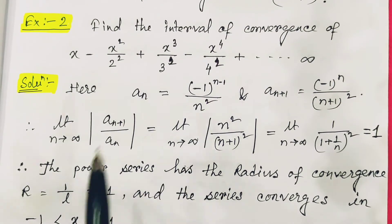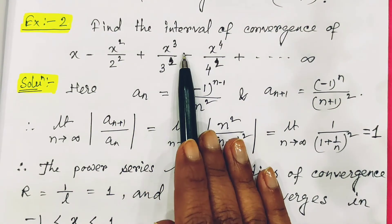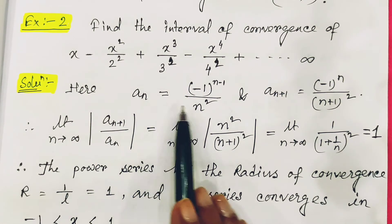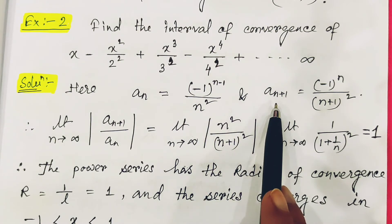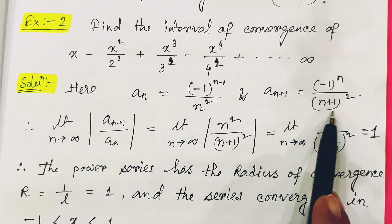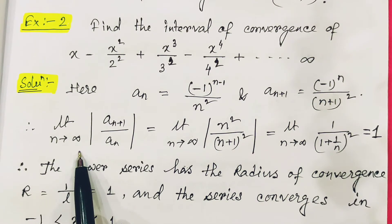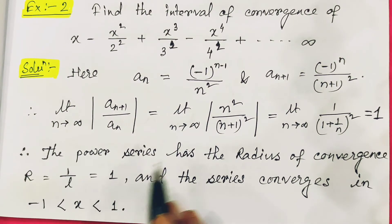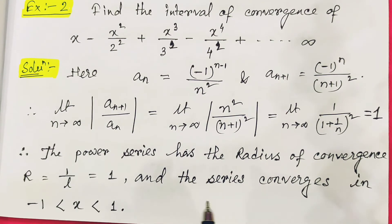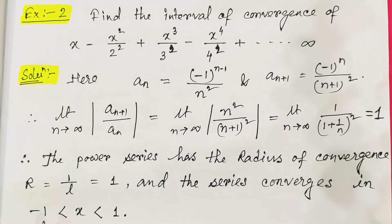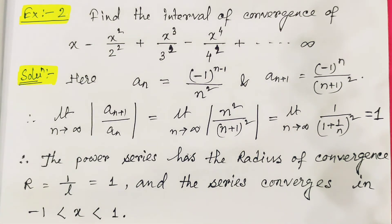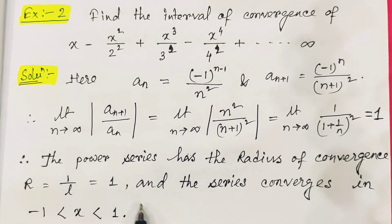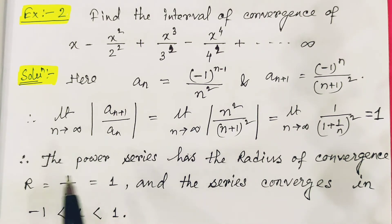Second worked example: the series is x − x²/2² + x³/3² − x⁴/4² + ... — this is an alternating series. Here a_n = (−1)^{n−1}/n² and a_{n+1} = (−1)^n/(n+1)². Applying the ratio test gives a limiting value of 1, so the radius of convergence R equals 1, and the series converges within the interval (−1, +1). When |x| > 1 the series is divergent.